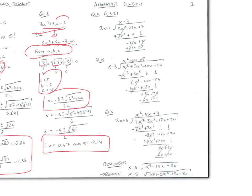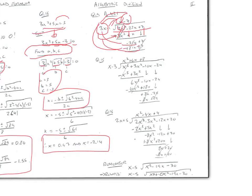Now let's look at algebraic divisions. We have (3x-1) dividing into 3x²-22x+7. We say 3x goes into 3x² x times; x multiplied by 3x is 3x², and x multiplied by -1 gives -x. We change the sign to +x so they cancel. -22x + x gives -21x. Bring down +7. Then 3x goes into -21x negative 7 times; -7 by 3x is -21x, and -7 by -1 is +7. Change signs, both cancel.